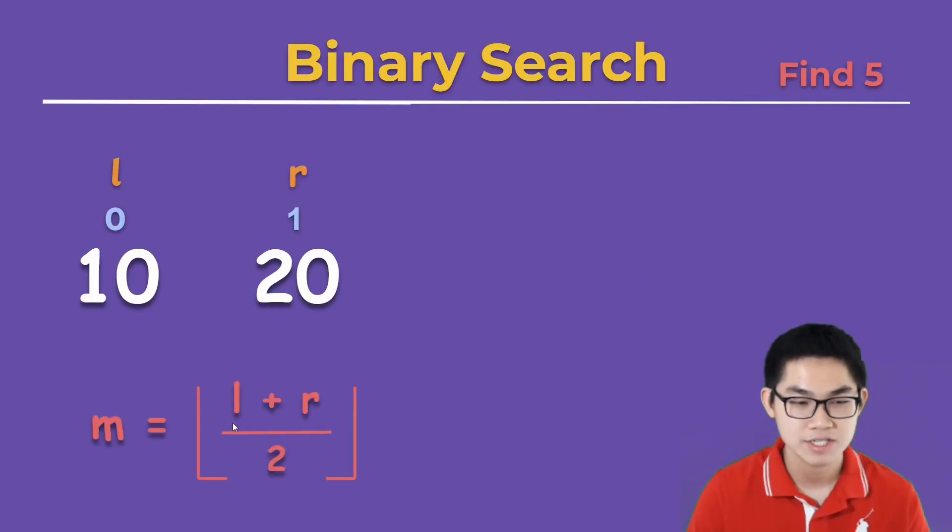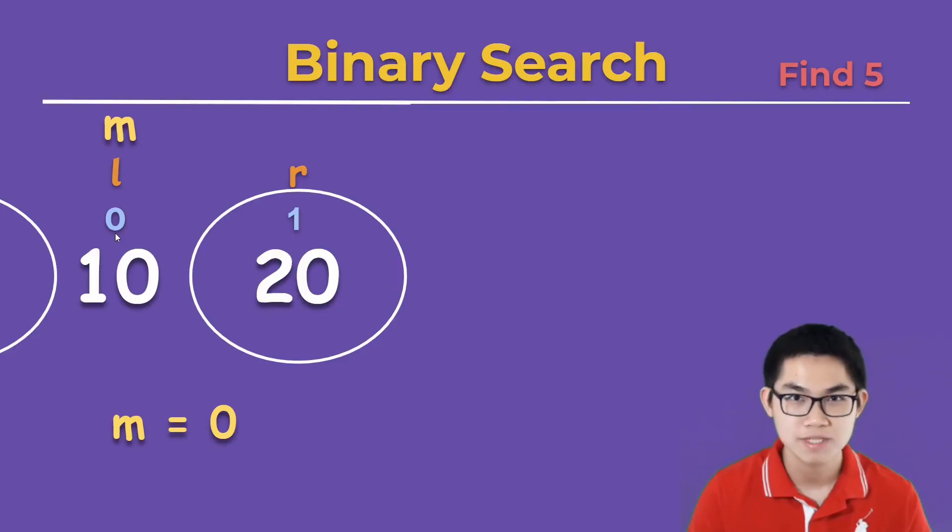So mid is L which is 0, R is 1. We get 1 divided by 2 which is 0.5, then you round down to 0 and we split the array into two groups again.